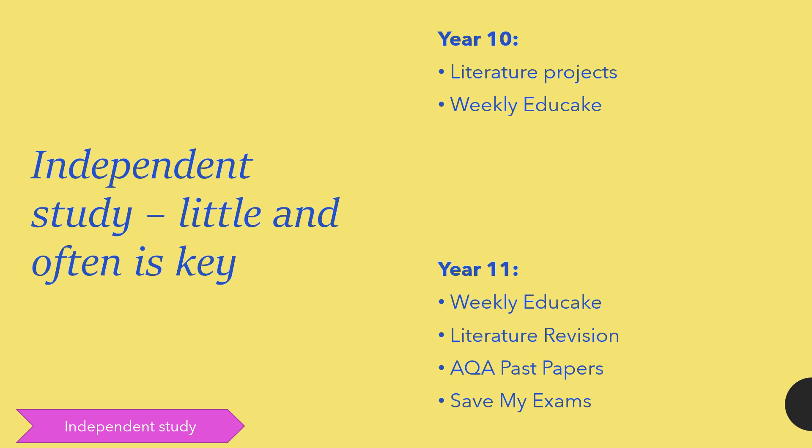For independent study, we get asked quite often how to revise for English. It's really hard because, unlike maths and science, it's often not right or wrong — it's often lots of essay practice. Our guidance is that little and often is essential; it's the key to English revision. In year 11 they have weekly Educate sessions, they need to be doing literature revision, and they can also do AQA past papers. The website Save My Exams is a great place to look, with past papers and practice questions that are really useful for revision sessions.